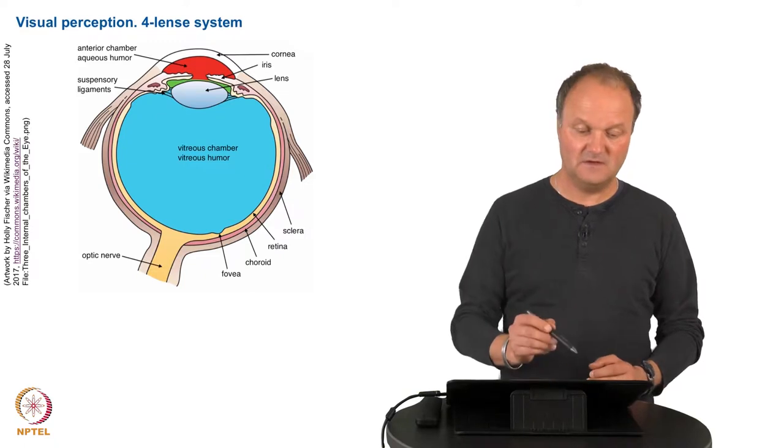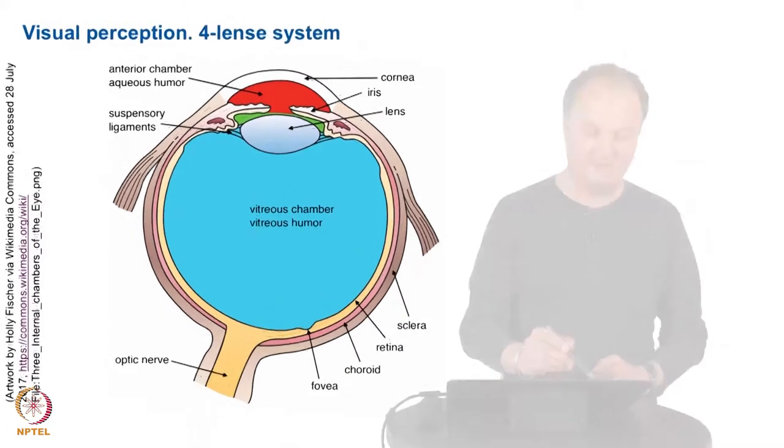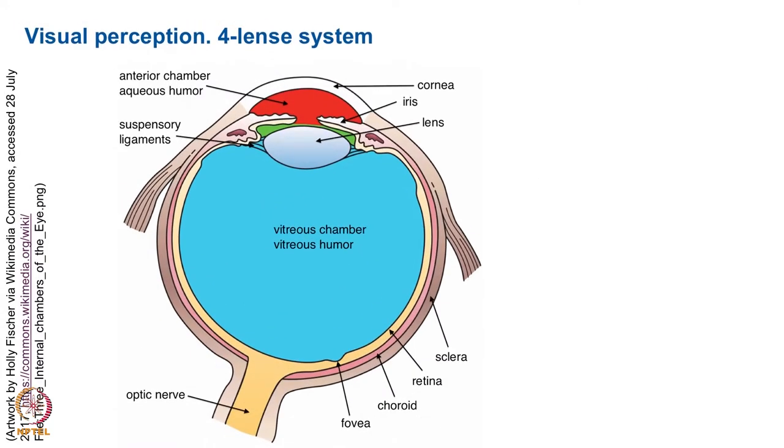The four lenses you can see in the picture behind me, there is first the transition between the air surrounding the eye and the so-called cornea which is the outer skin of it.